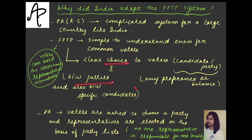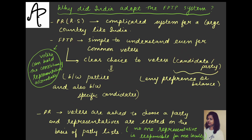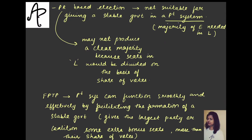In FPTP, voters can hold the constituency representative accountable. If I chose a candidate and they don't work properly, I can hold that individual accountable. But in PR, since I only chose the party, even if the candidate doesn't work for my constituency I cannot hold them accountable. In PR, representatives are elected purely on the basis of a party list — no one representative is responsible for one locality.